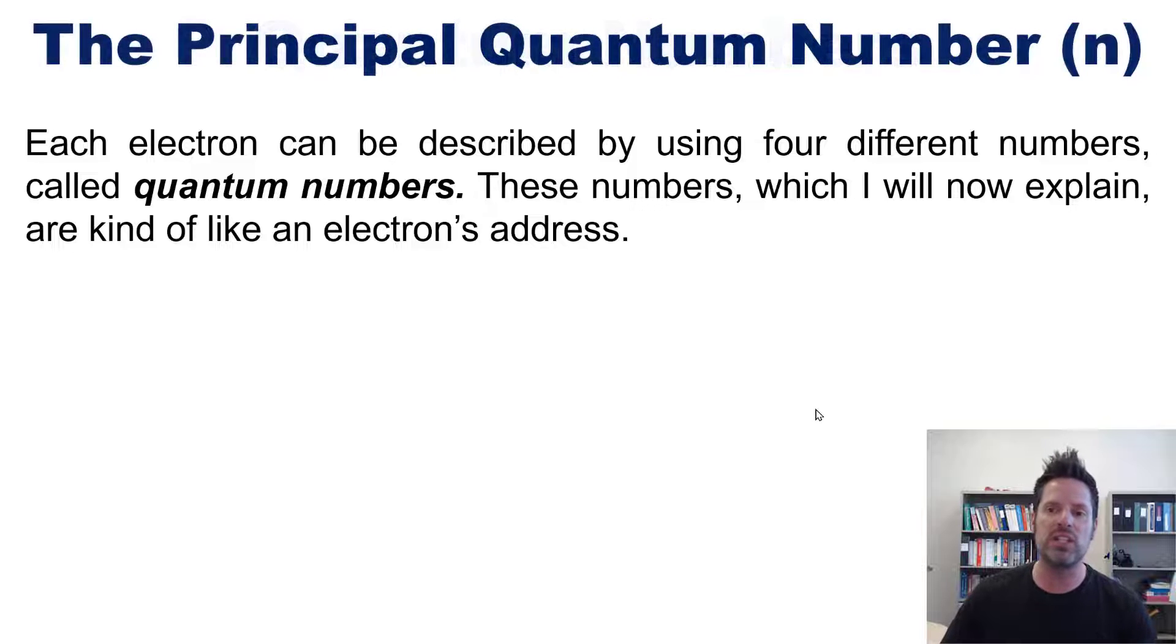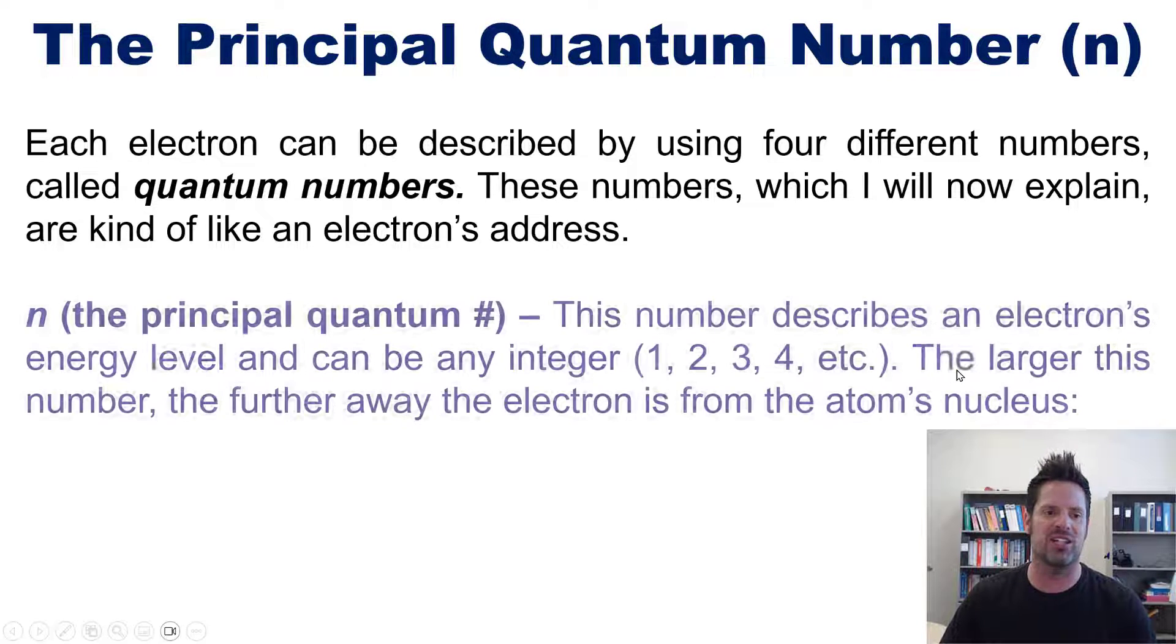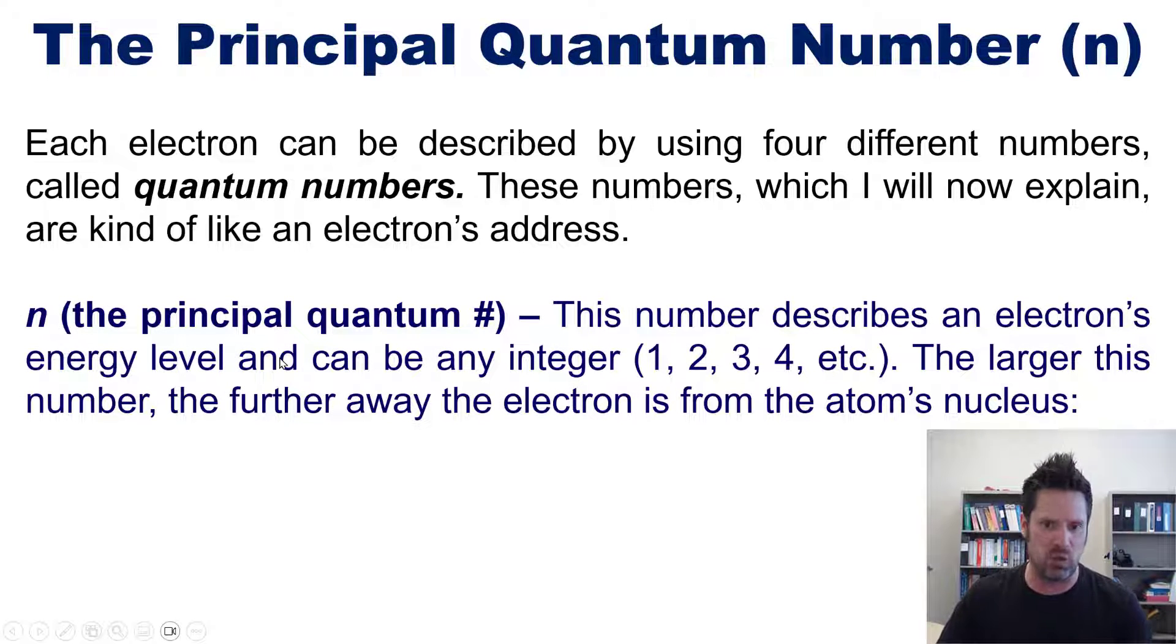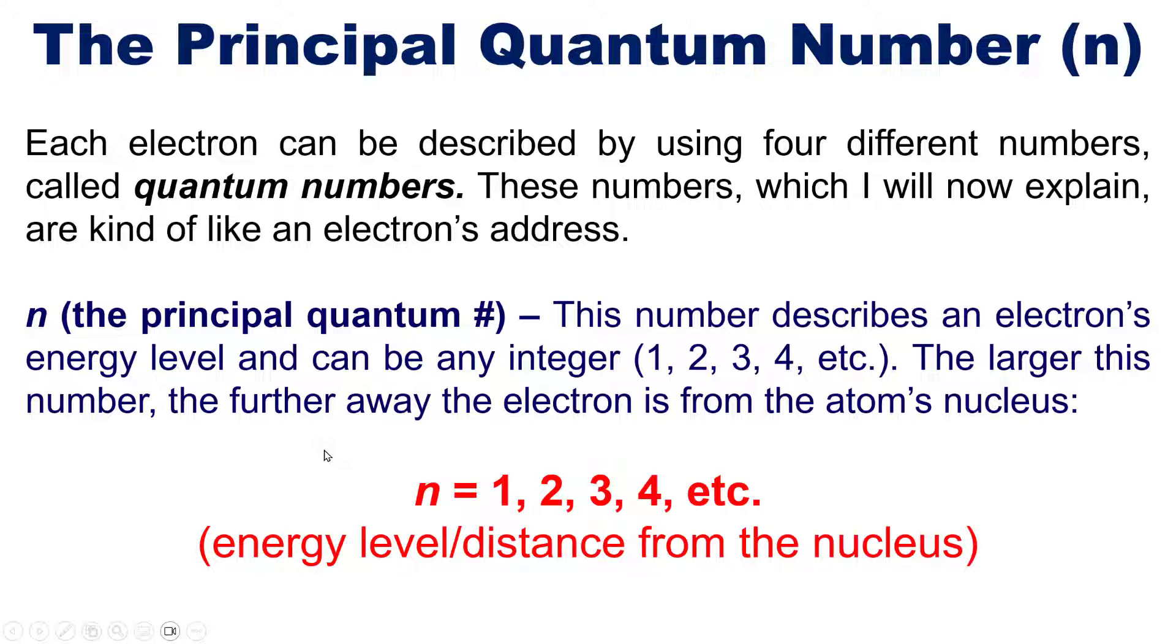The first of these is called the principal quantum number, abbreviated as n. The principal quantum number describes an electron's energy level and can be any integer from 1 and above: 1, 2, 3, 4, and so forth. Exactly which of these is possible may vary depending on the orbital type and which element you're discussing. The larger this number, the further away the electron is from the atom's nucleus.